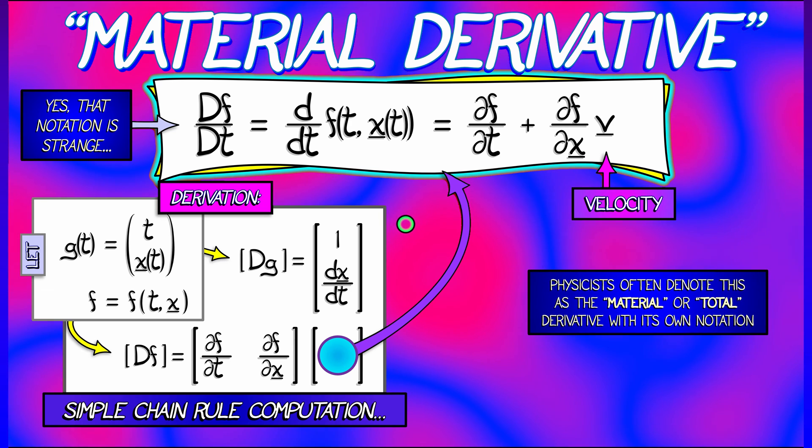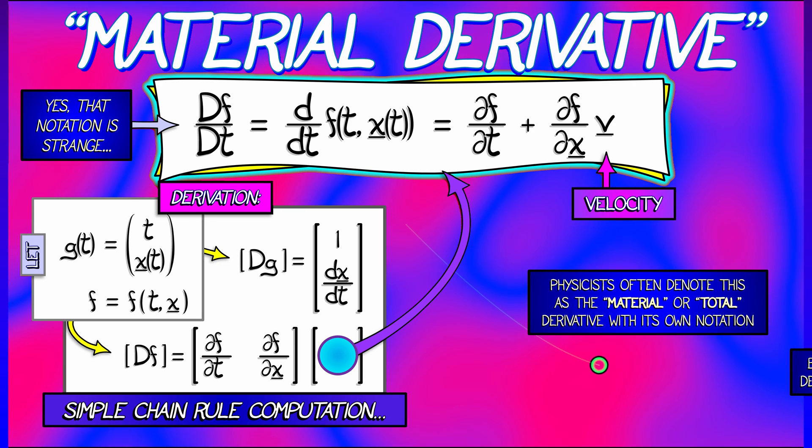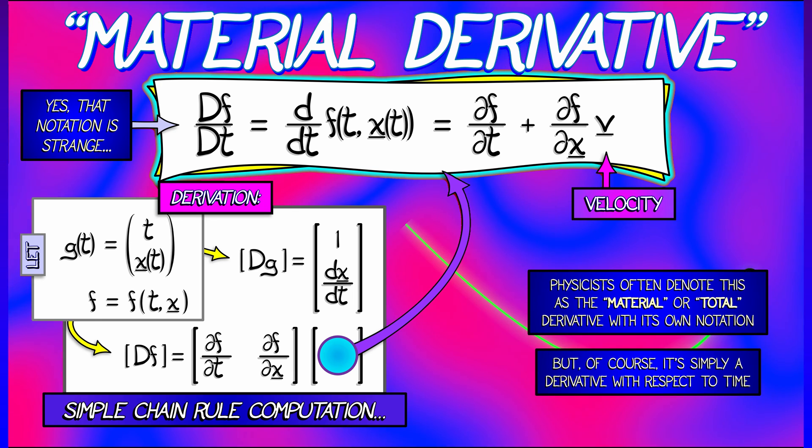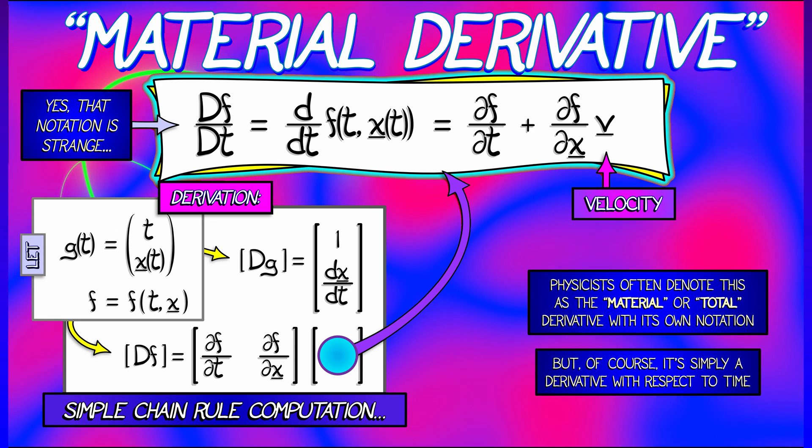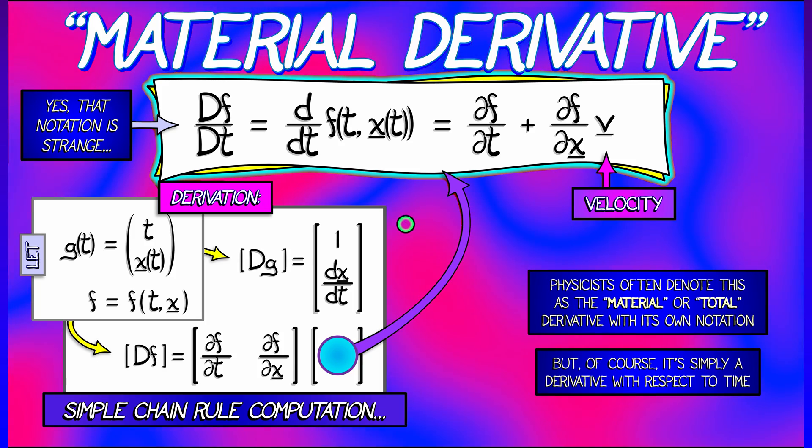Now, a few things to note. Physicists often call this the material derivative. Sometimes they call it the total derivative. It's got this weird notation. Of course, this is simply just a derivative with respect to time. It's not that big of a deal. There's nothing magical about this. This is one example of using the chain rule in practice.